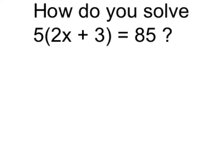There are a couple of ways we can do that, but in this case, because I noticed that 5 goes into 85 directly, what I can actually do is divide both sides by 5.